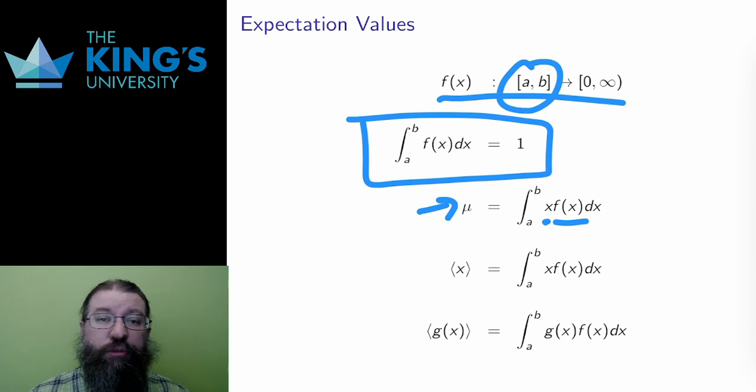Multiplying by the measurement and integrating gives the typical measurement. And instead of mu, I can write this as x between angle brackets and call this the expectation value. And that's another term that captures the idea of a typical measurement.